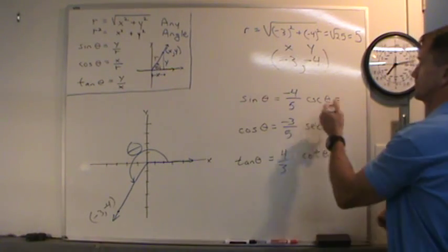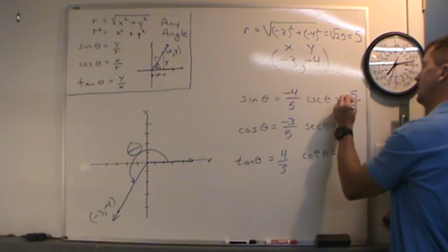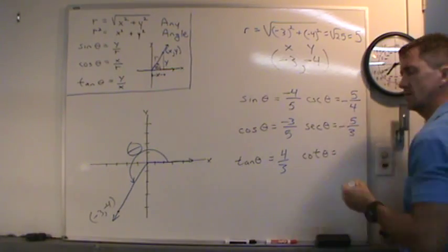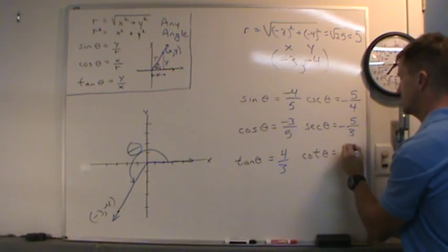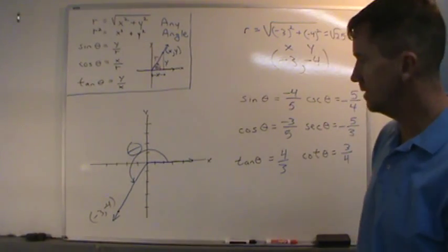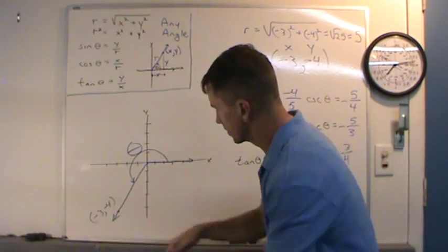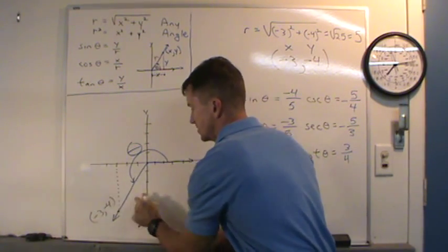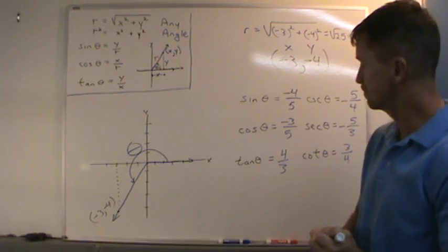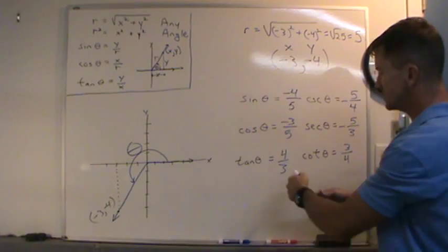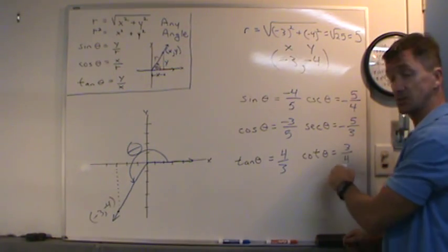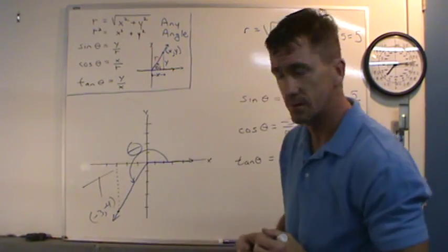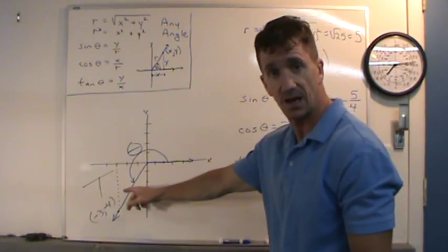How about the reciprocals? Cosecant is 5 over negative 4 — or negative 5 fourths. Secant is 5 over negative 3 — negative 5 thirds. Cotangent theta is 3 fourths. Notice there's actually a triangle here: the horizontal distance is 3, the vertical distance is 4, and the hypotenuse is 5. Notice tangent was positive and its reciprocal cotangent was positive, but all the other trig functions were negative. That's always true when the terminal side lies in quadrant 3.